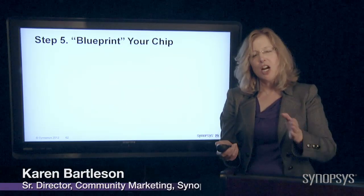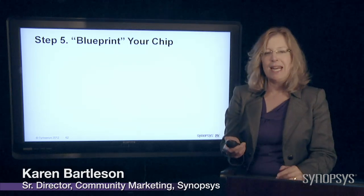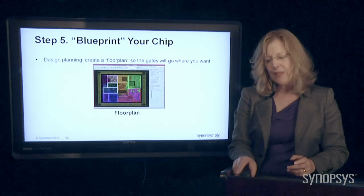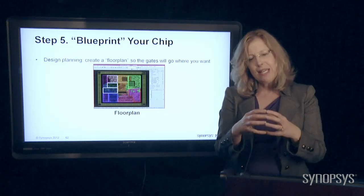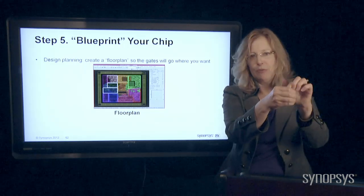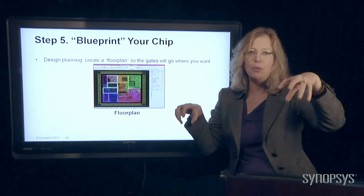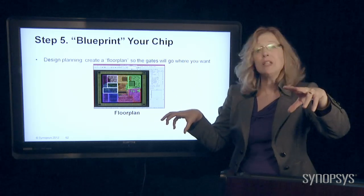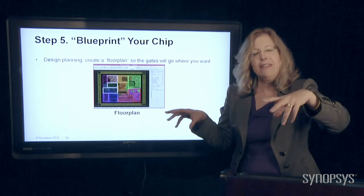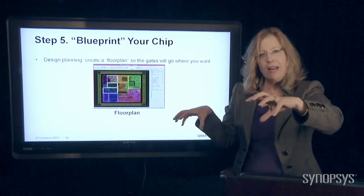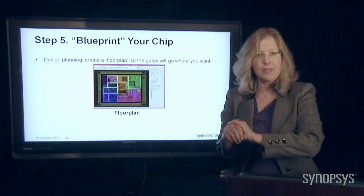The next step is to start getting more into the physical implementation of the chip — where are all the little transistor switches going to be and how are we going to connect them? The first thing we want to do is create what we call a floor plan. The floor plan is really important because gates that need to talk to each other fast need to be connected close so they can switch quickly, while other gates can live on the opposite side of the chip.